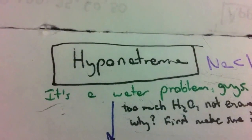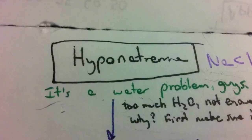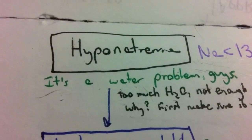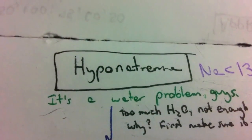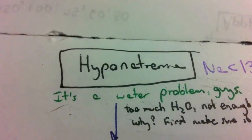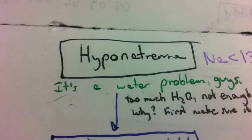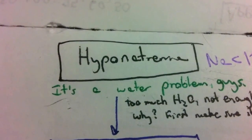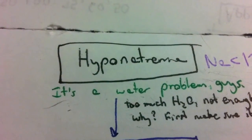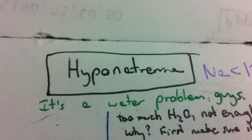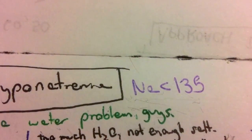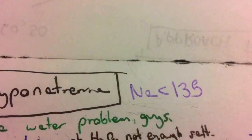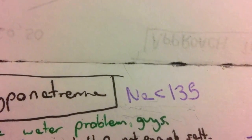Today we're going to be talking about hyponatremia - a subject near and dear to my pituitary and kidneys. This is the most common electrolyte abnormality you will encounter in the hospital, and it is defined as a sodium of less than 135.